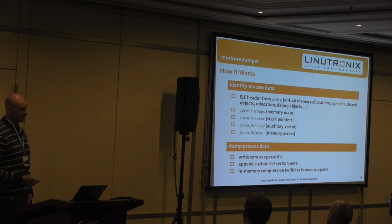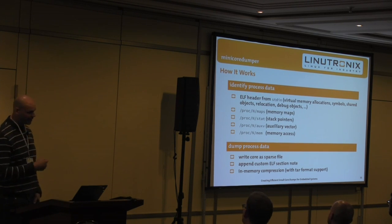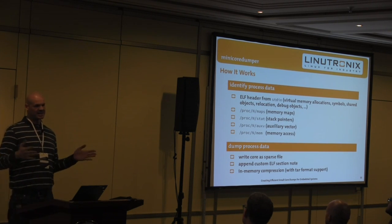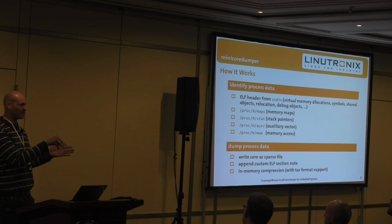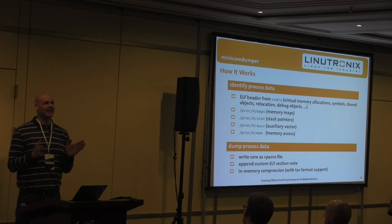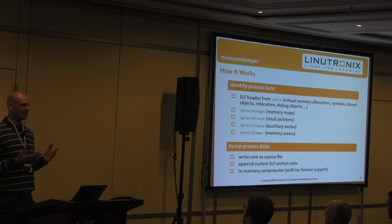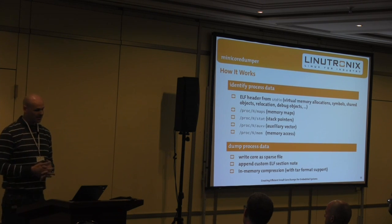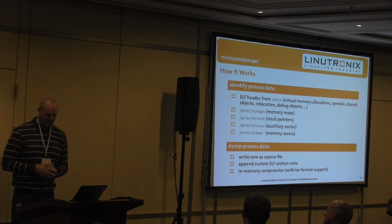Once we have everything we need and know everything about the process, we begin writing the core file as a sparse file. A sparse file is one that maybe is declared as 500 megabytes but only has 27 bytes written at a particular position — that file only takes up a few kilobytes on the filesystem even though it's technically a 500-megabyte file, with the rest automatically treated as zeros. Since most of the mini core dumper output will be zeros, we definitely want to use sparse files.